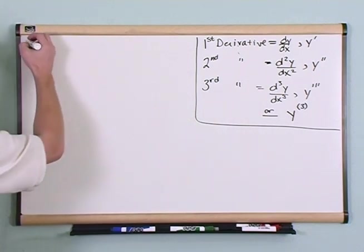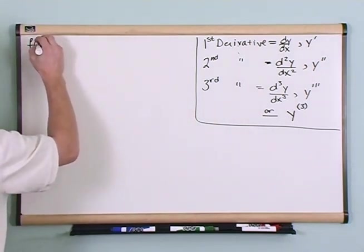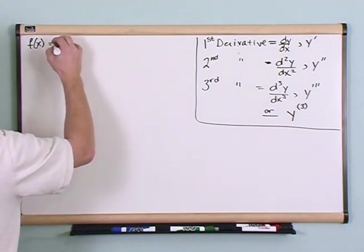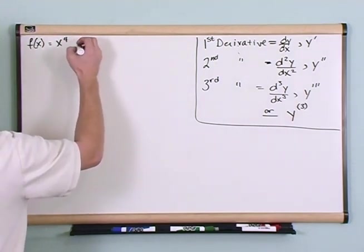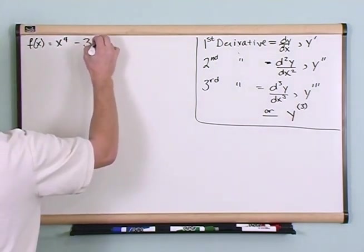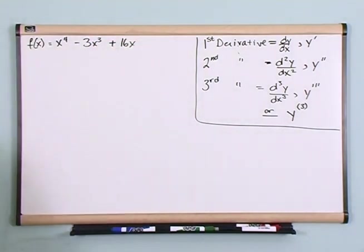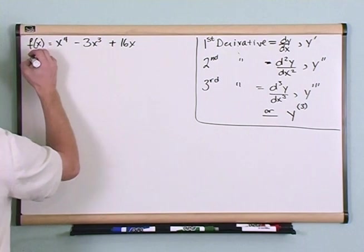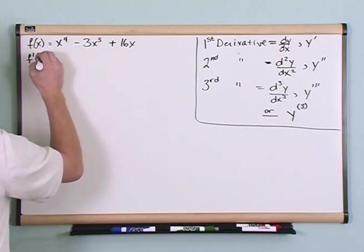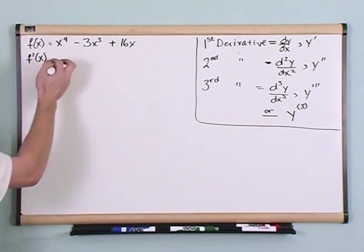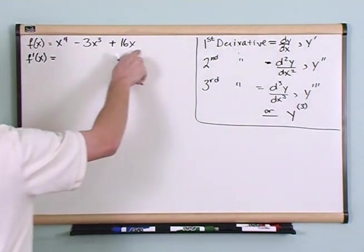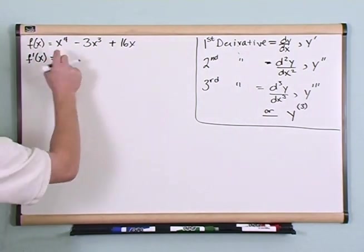So what if you have f(x) equal to x to the fourth power minus 3x to the third power plus 16x, and the question is: find the first and the second derivative of this function? We've been finding first derivatives with the single prime mark, and we know how to take derivatives of polynomials like this, so we just do that.